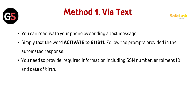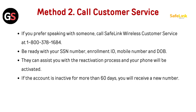Method 1: Via text. You can reactivate your phone by sending a text message. Simply text the word ACTIVATE to 611611. Follow the prompts provided in the automated response. You need to provide required information including your SSN, enrollment ID, and date of birth.